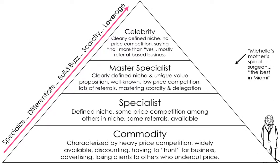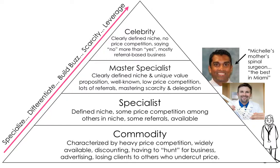If you move up to the next level, the specialist is someone like an orthopedist — someone who specializes in bones. There's more opportunity to generate referrals from there, and there's a niche. Now, the master specialist is, for example, the best spinal surgeon in Miami. If you can use the word 'the' in front of the name, then you know you're talking about a master specialist. A master specialist has a clearly defined niche and a unique value proposition — they're well-known, face little price competition, and get lots of referrals.